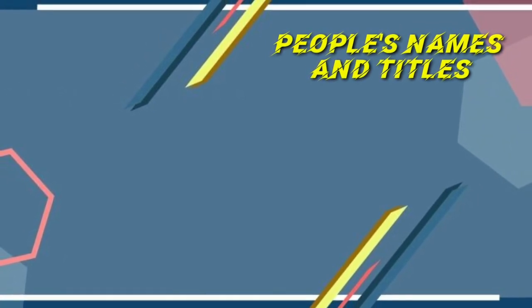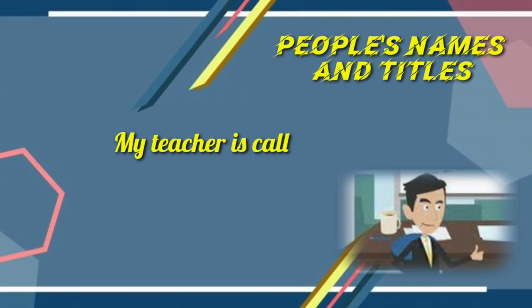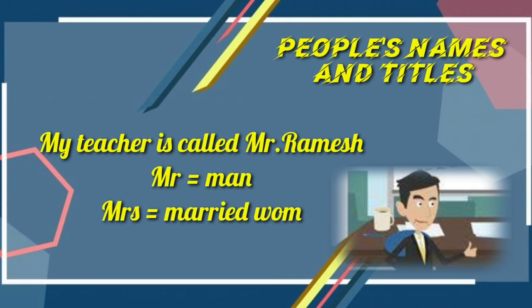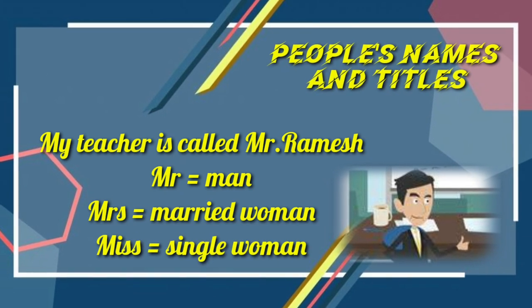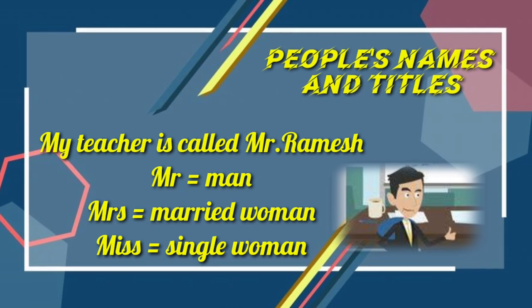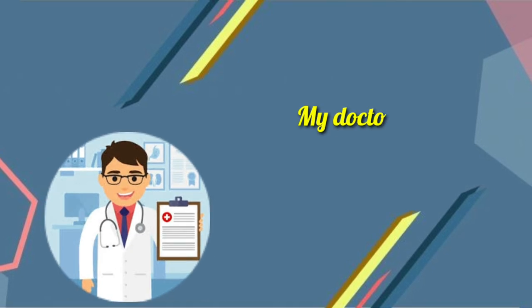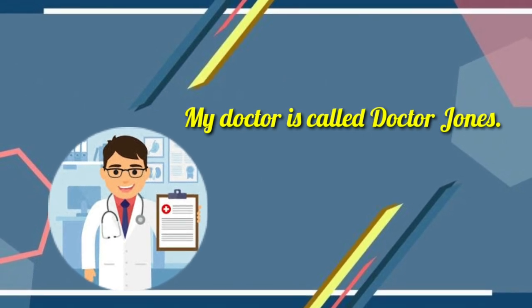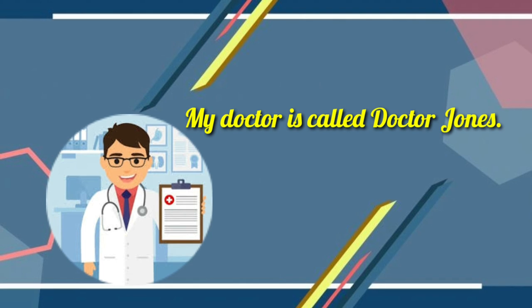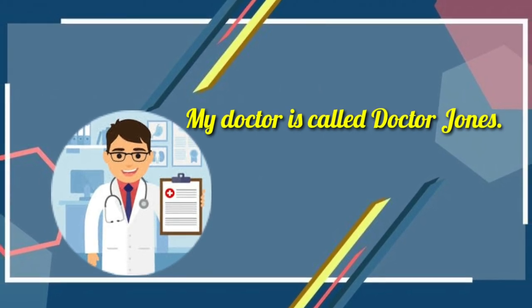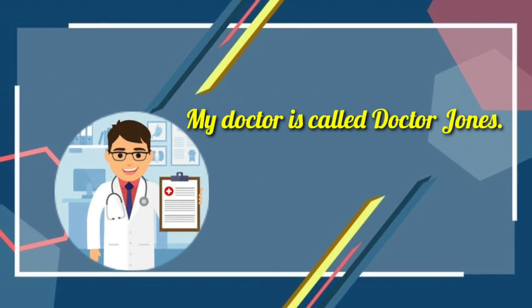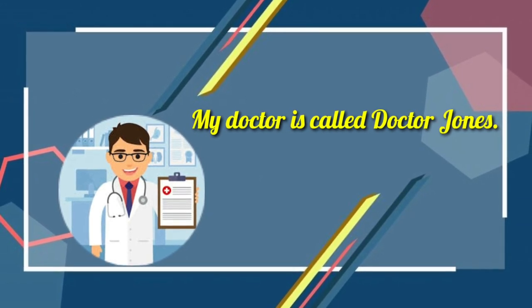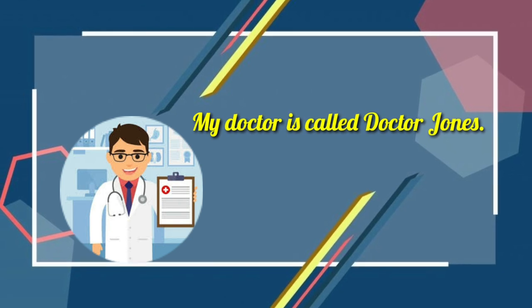People's names and titles — this is a very common use of capital letters. Example: 'My teacher is called Mr. Ramesh.' The titles are Mr. for a man, Mrs. for a married woman, and Miss for a single woman. Example: 'My doctor is called Dr. Jones.' Doctor is a title, so it uses a capital D. Jones is a name. However, when the word 'doctor' is not used as a title, it is just a lowercase letter.